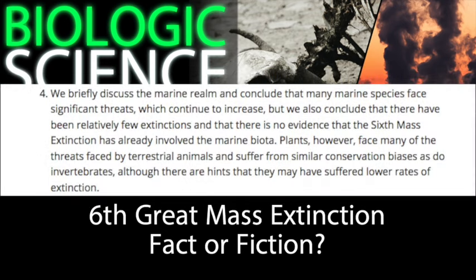Outcome four: "We briefly discuss the marine realm and conclude that many marine species face significant threats, which continue to increase, but we also conclude that there have been relatively few extinctions and that there is no evidence that the sixth mass extinction has already involved the marine biota. Plants, however, face many of the threats faced by terrestrial animals and suffer from similar conservation biases as do invertebrates, although there are hints that they may have suffered lower rates of extinction."